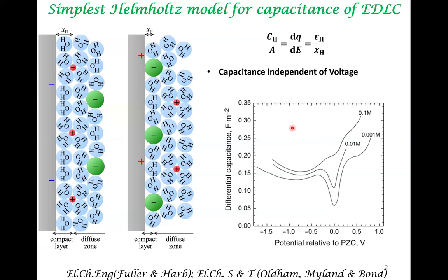There are other features worth observing. One is that as you go to high voltages, say on the negative side, the capacitance becomes more or less constant. Also, as you go to higher concentration, the symmetry between the positive potential and the negative potential is lost. All these things are not captured by the simplest model, so we need to look at more complex models.